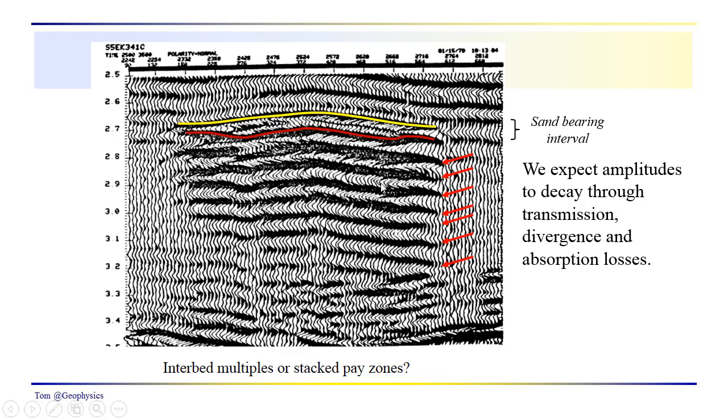One thing that you want to be on the lookout for would be that these are just interbed multiples. So we have one first, second, third, fourth, fifth, sixth, and so on. We expect to see amplitudes decay through transmission losses as we go through successive bounces in this layer, transmission, divergence, absorption losses, until they gradually disappear. What else can we see in this section?